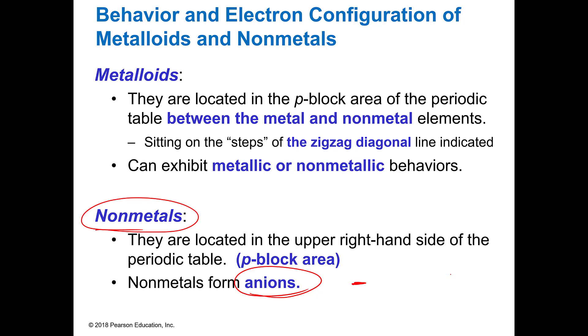The metalloids are going to, you're going to see this zigzag line that separates the non-metals from the metals. And then you're going to have some in this area here of the zigzag line that can exhibit both properties, some of one, some of the other, of the metals and the non-metals. So they're kind of like a transitional group.